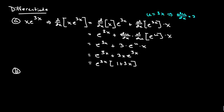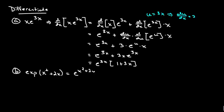Let's go ahead and look at the next function, which is written like this — kind of a strange way of writing it, but I'll go ahead and convert it. So it's the exponential of x squared plus 2x. When we write exponential, we're assuming this guy has a base e. So another way of writing this is e to the x squared plus 2x.